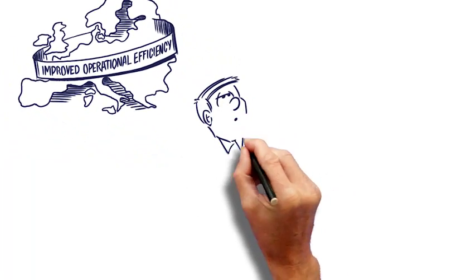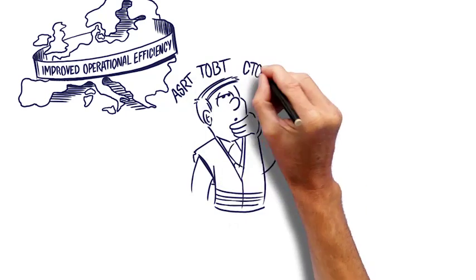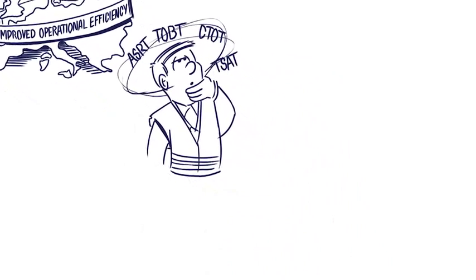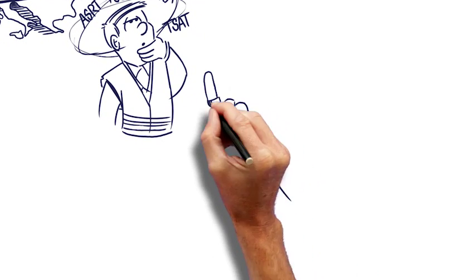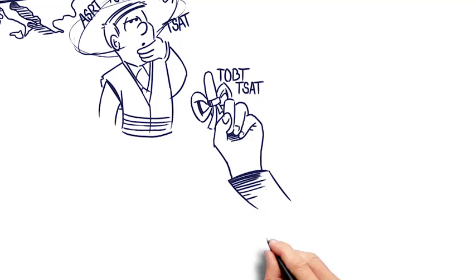The new turnaround process comes with new abbreviations, but don't worry, you'll quickly get your head around it once you start working with it. To begin with, you should know these three abbreviations – TOBT, TSAT and CTOT.